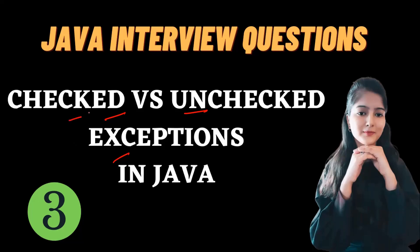Checked exceptions are those that are checked by the compiler to ensure smooth execution of your program at runtime. For example, if you're trying to open a file, a possible scenario is that the file does not exist — and this can happen frequently. To handle this, the compiler requires you to either wrap your code in a try-catch block or use the throws keyword.